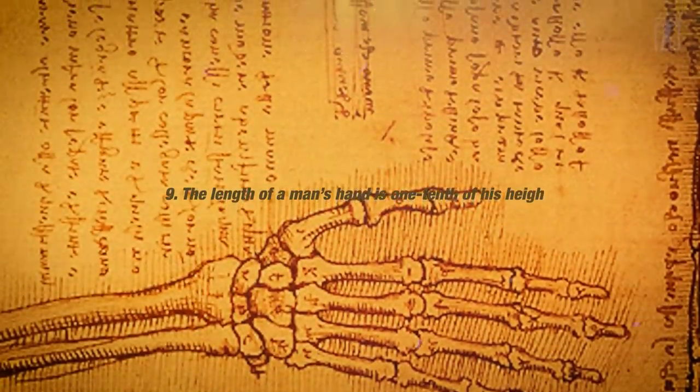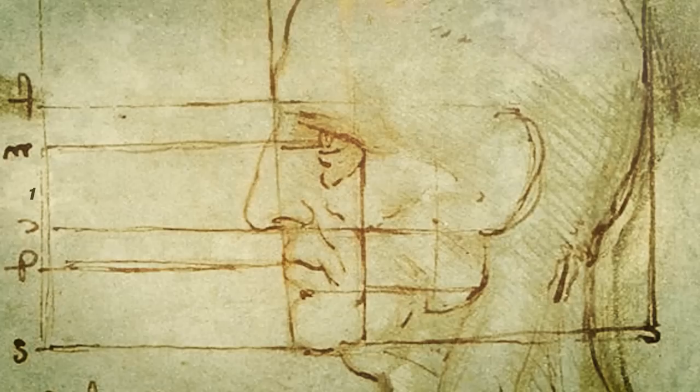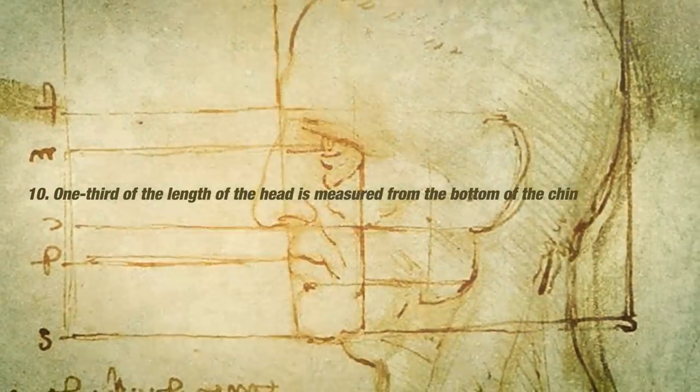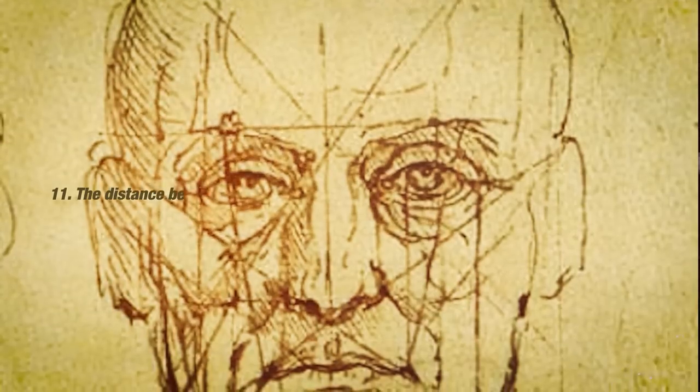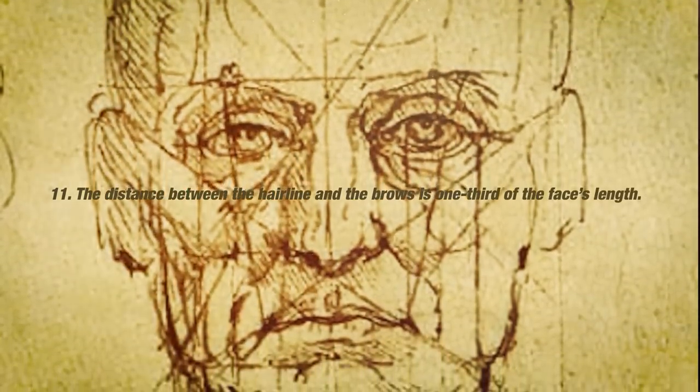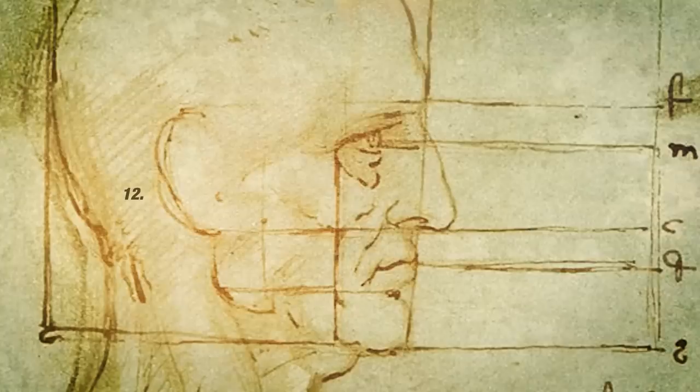Number 9. The length of a man's hand is one-tenth of his height. Number 10. One-third of the length of the head is measured from the bottom of the chin to the nose. Number 11. The distance between the hairline and the brows is one-third of the face's length. Number 12. The length of the ear is one-third of the length of the face.